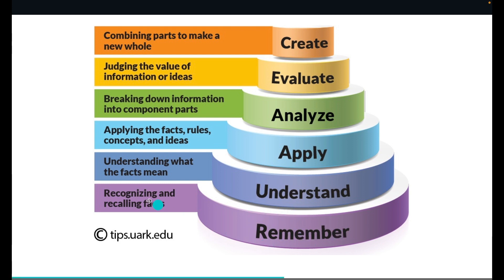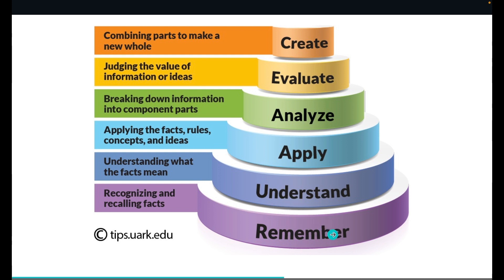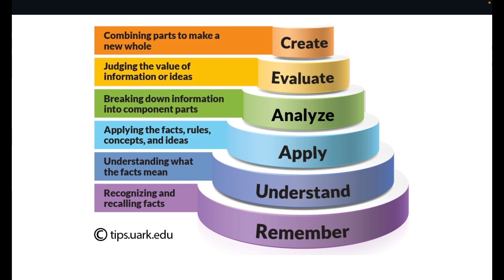The most basic level is to be able to remember and recall facts. If you also understand what you remembered, that is the next higher level — we want our learners not just to remember but to understand what those facts mean. But there is still a higher level: once you understand how things mean, it allows you to apply these facts, rules, and concepts to a completely different situation — that is the third level of cognitive process called 'apply.'